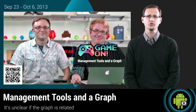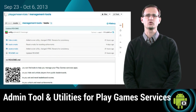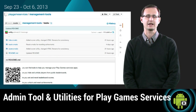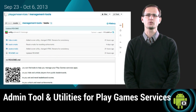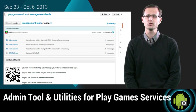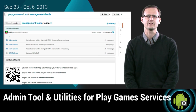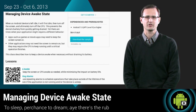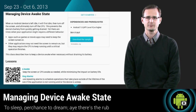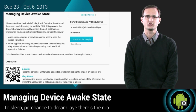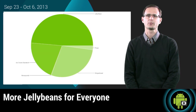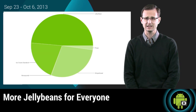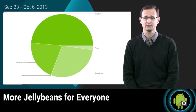We also launched admin tools and utilities for Google Play game services. And for those of you that prefer a good book over watching TV, check out this new guide to managing device awake state. In ecosystem news, we saw the proportion of Android devices running Jelly Bean nearly hitting 50%.